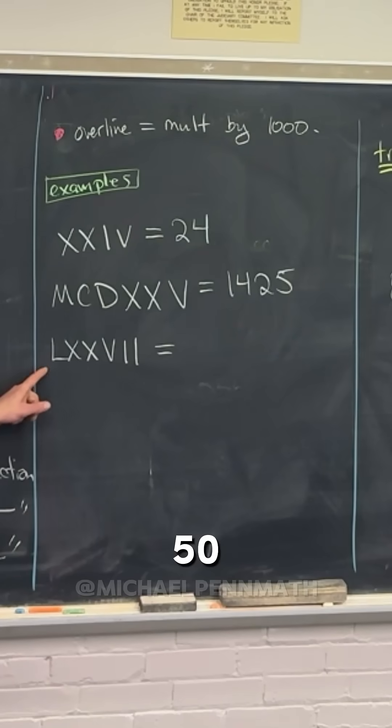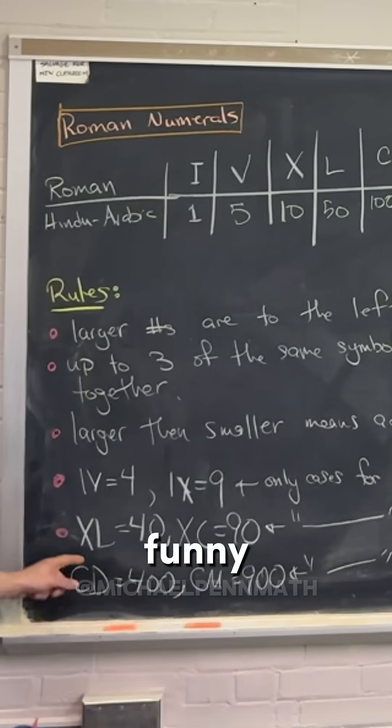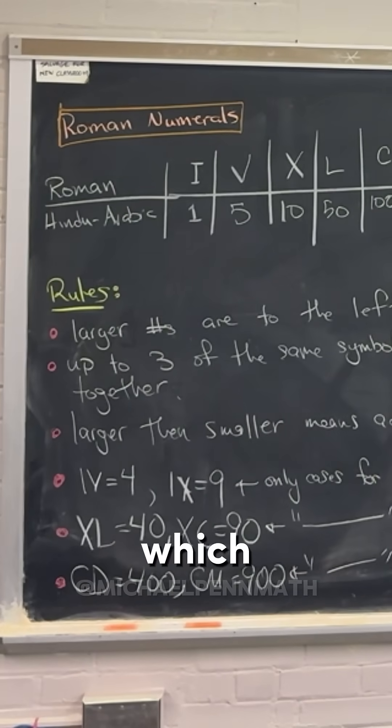So let's see, we're gonna have 50 plus 10 plus 10, that's 70, plus 1 plus 1, so that's 77, right? We don't have any funny business with this subtraction in this case, which is cool.